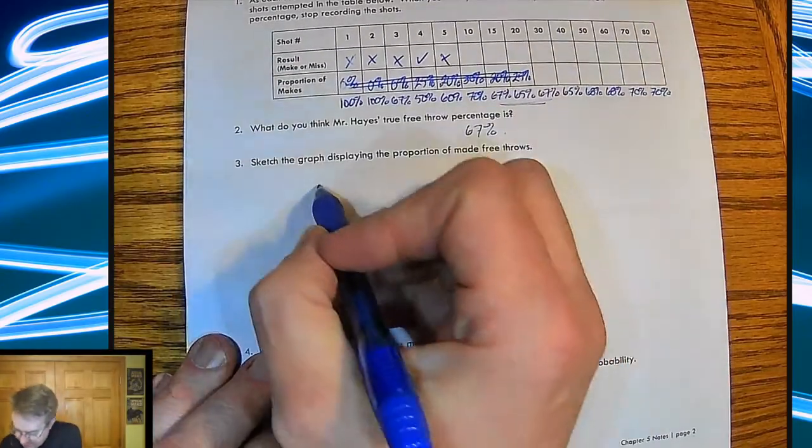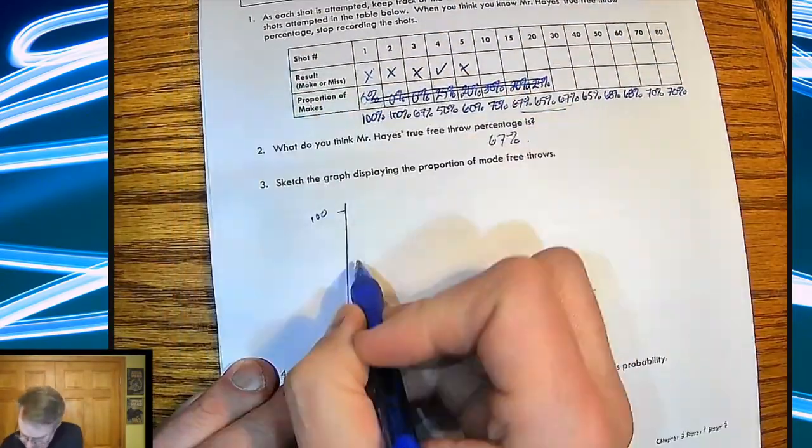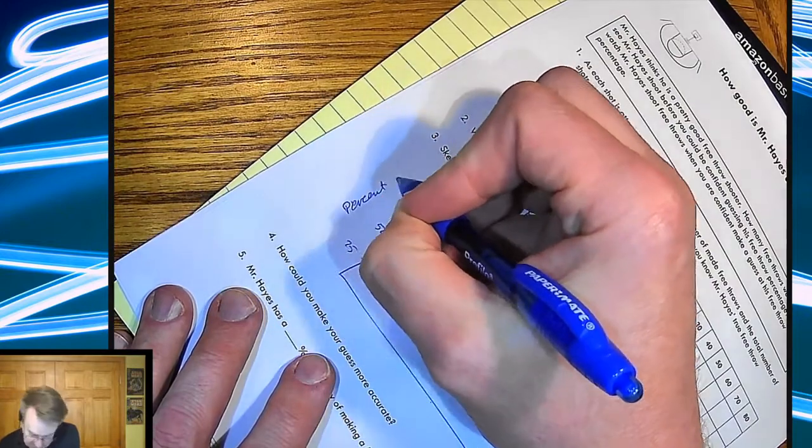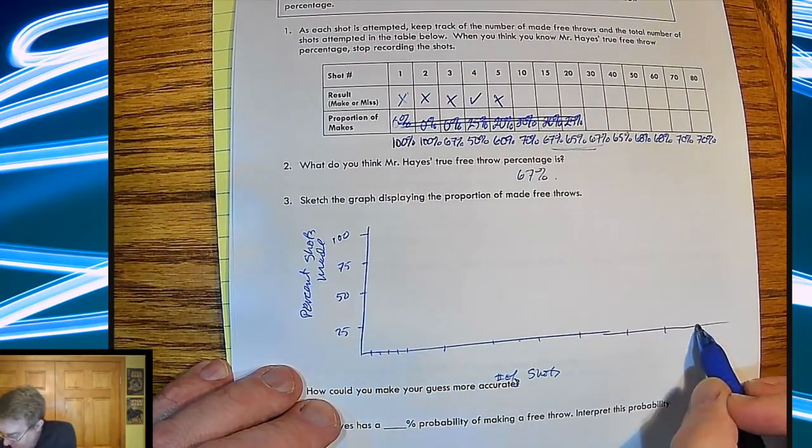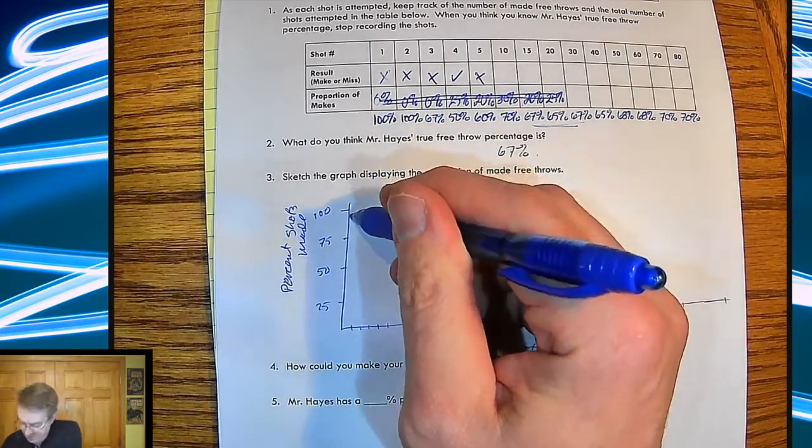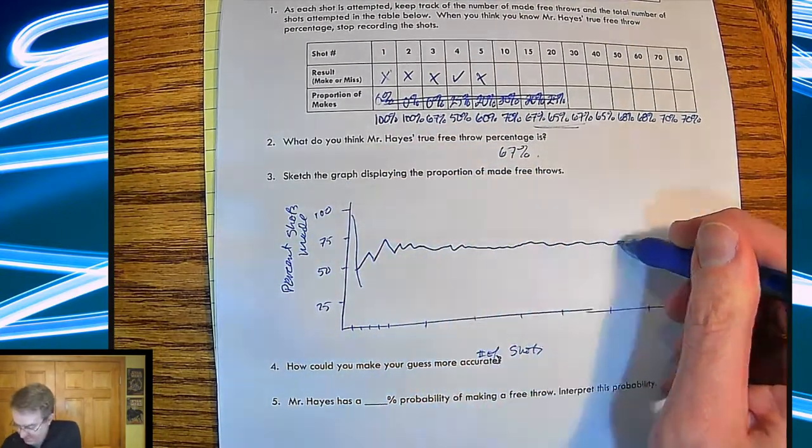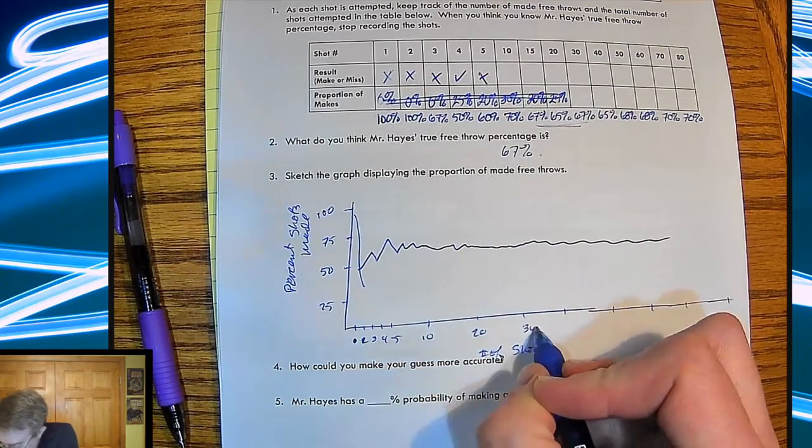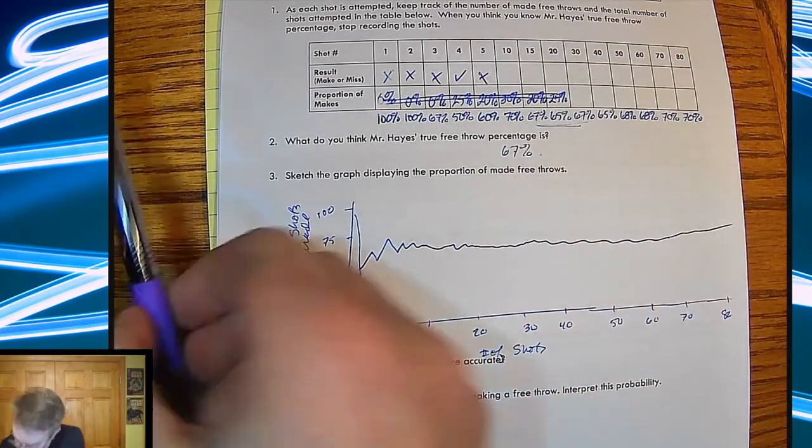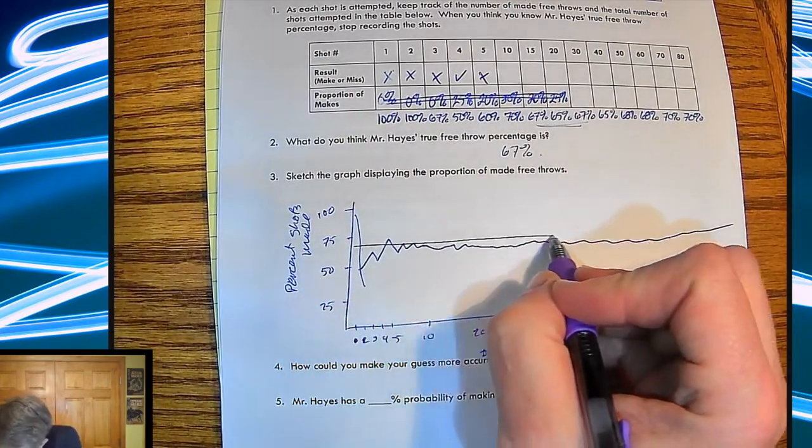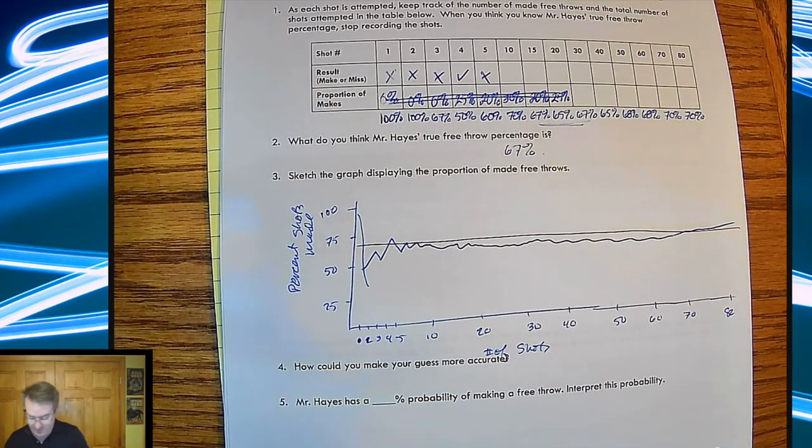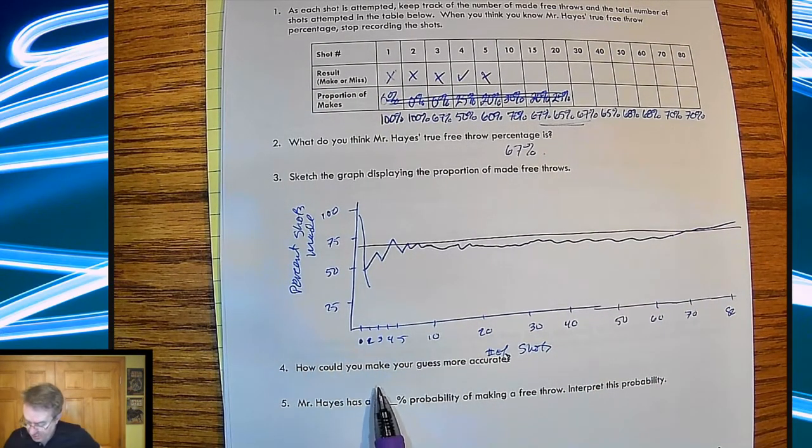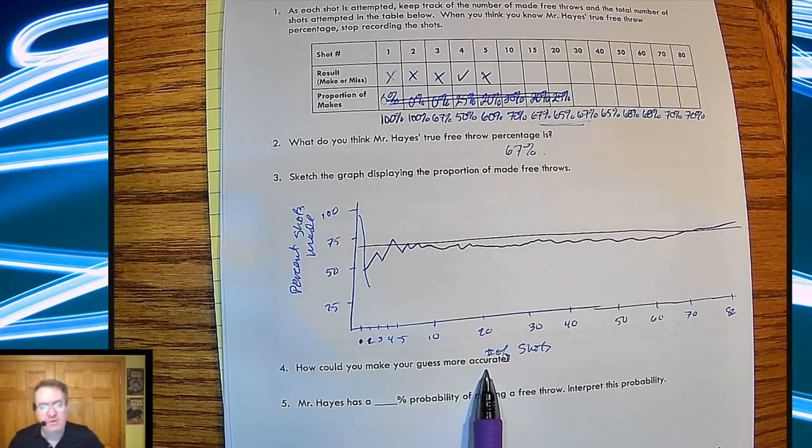So what happens then is you get this. So I've got this true percentage kind of running through here. So the question is, what is going on in the beginning part and what's going on? So how can you make your guess more accurate? Let's start with that.